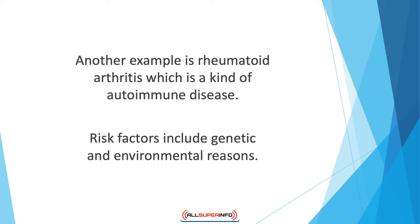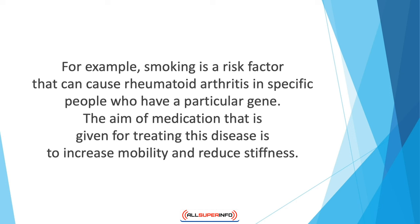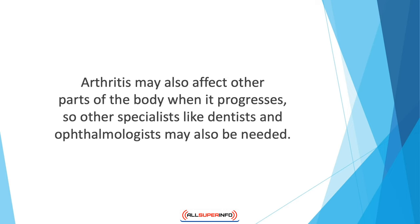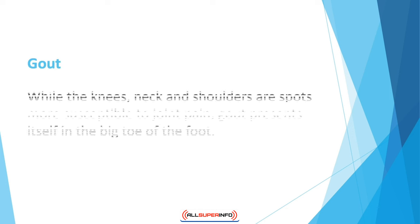In rheumatoid arthritis, inflammation increases in the body, causing joint damage and pain. Risk factors include genetic and environmental reasons — for example, smoking is a risk factor that can cause rheumatoid arthritis in people who carry a particular gene. Medication aims to increase mobility and reduce stiffness. Arthritis is diagnosed by a physician through blood testing and imaging scans. If the problem gets bad, an orthopedic surgeon may perform joint replacement surgery.